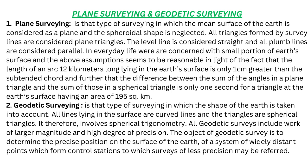All triangles formed by survey lines are considered plane triangles. The level line is considered straight and all plumb lines are considered parallel. This assumption is reasonable given that the length of an arc 12 km long on the Earth's surface is only 1 cm greater than the subtended chord, and the difference between the sum of angles in a plane triangle versus a spherical triangle is only 1 second for a triangle with an area of 195 km².